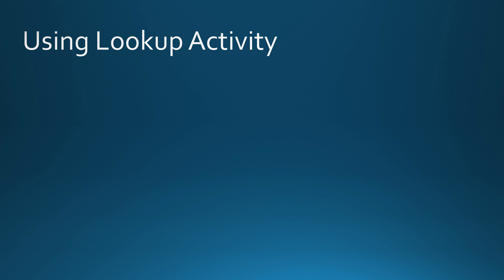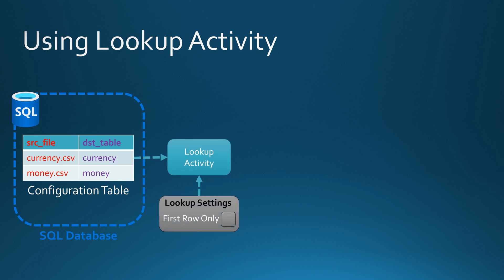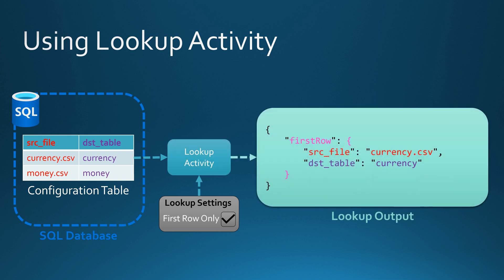Let's look at how inputs and outputs work with the lookup activity. We have a SQL database with a configuration table containing two columns: source file and destination table. The first row has source file 'currency.csv' and destination table 'currency'. The second row has source file 'money.csv' and destination table 'money'. If we configure the lookup activity to retrieve only the first row, the output will be just the first row — currency.csv and currency.